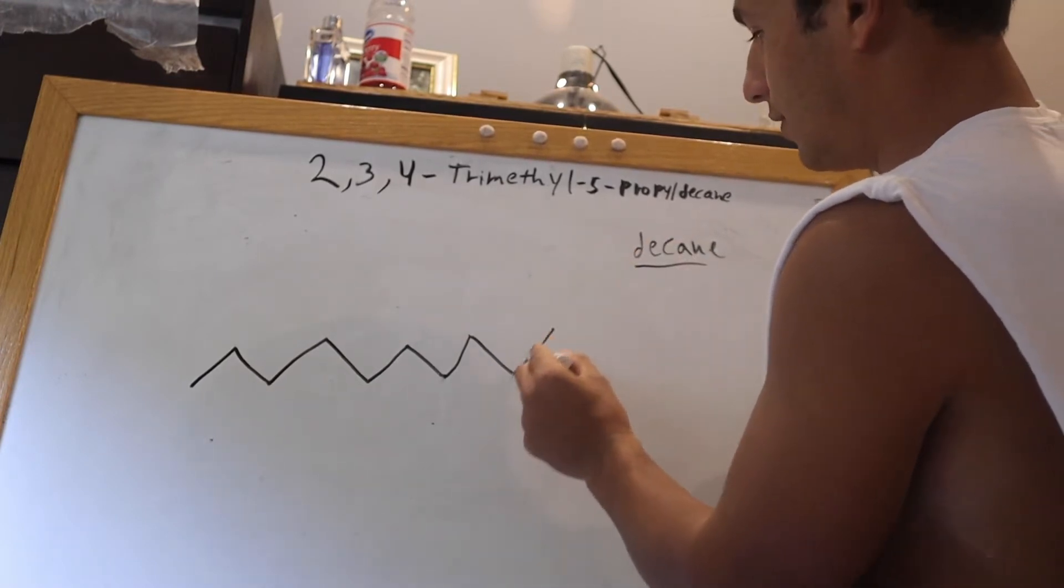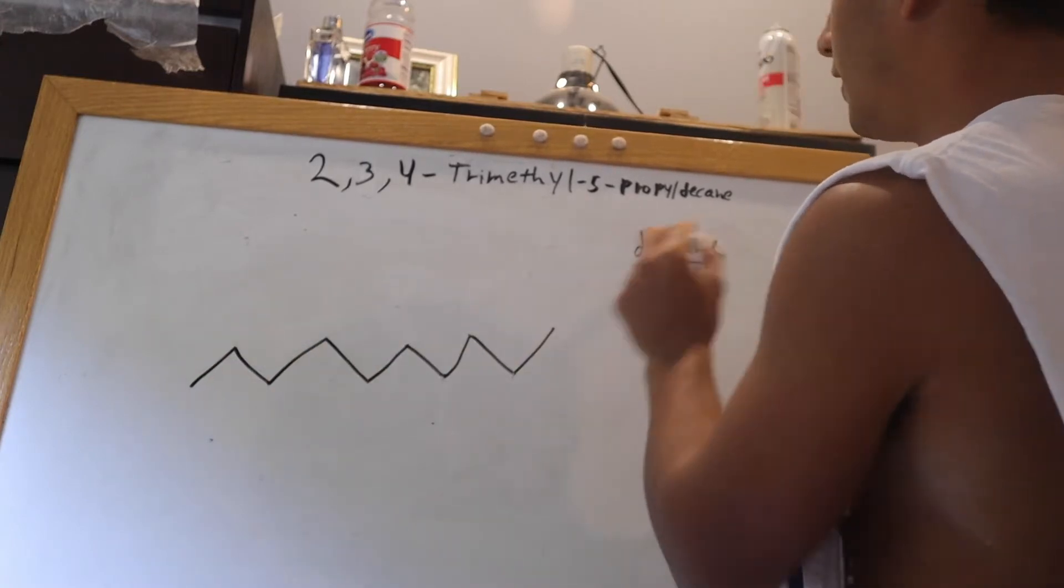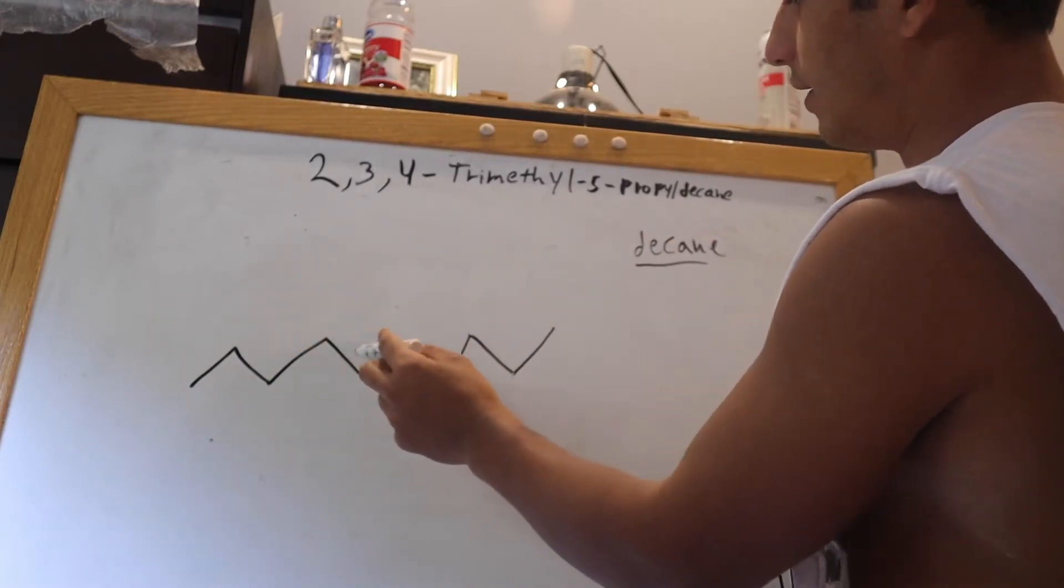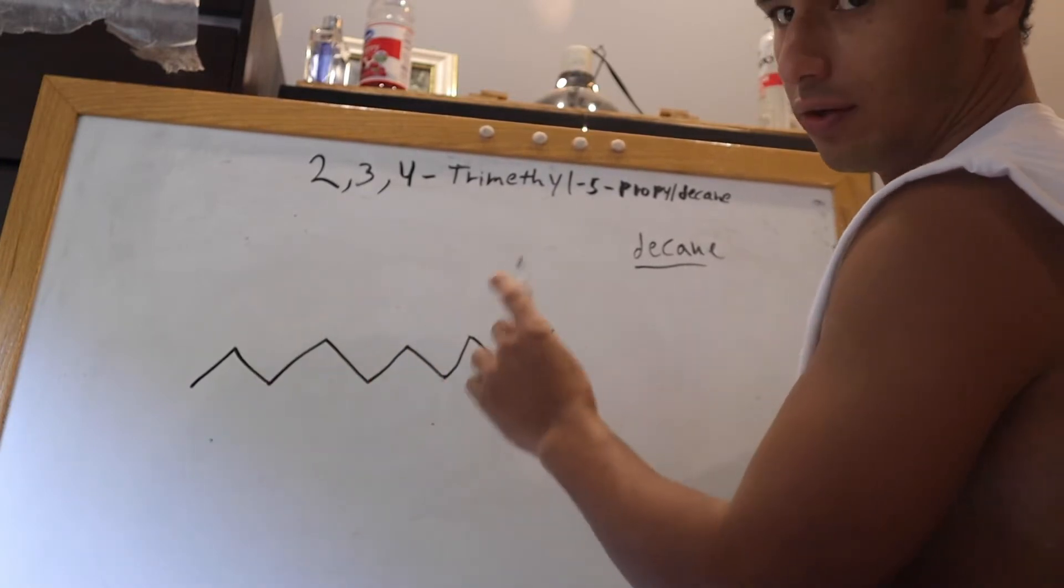Dec tells us 10 carbons, 1, 2, 3, 4, 5, 6, 7, 8, 9, 10. Ane tells us it's an alkane, so meaning that all of the carbons in this chain will have a single bond.